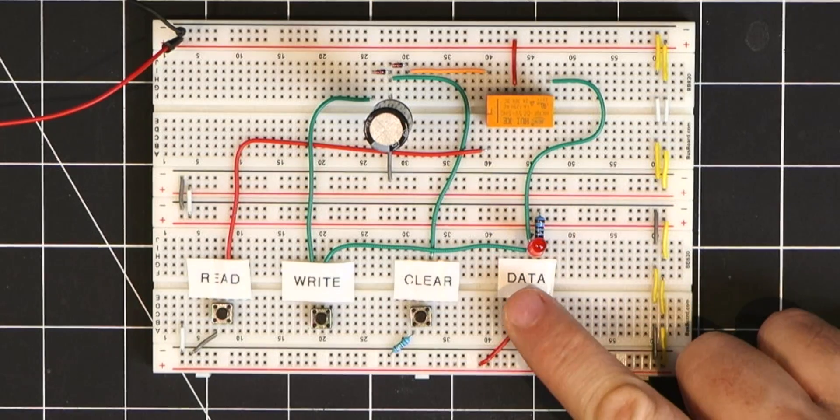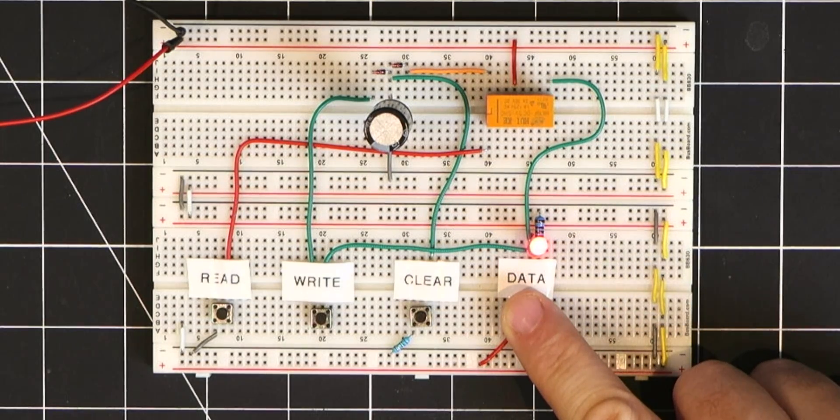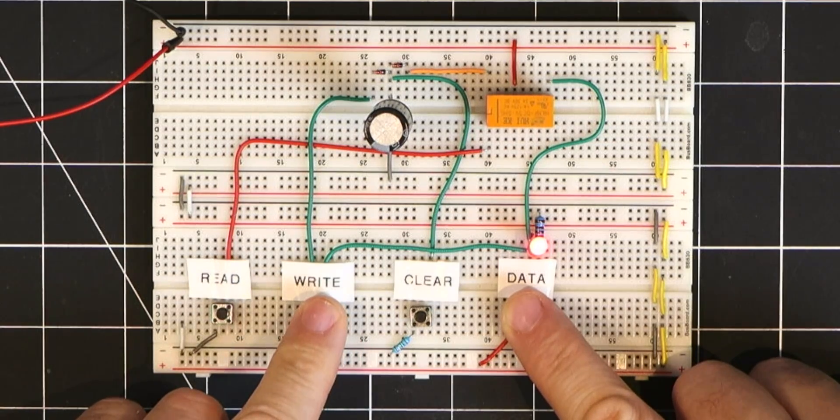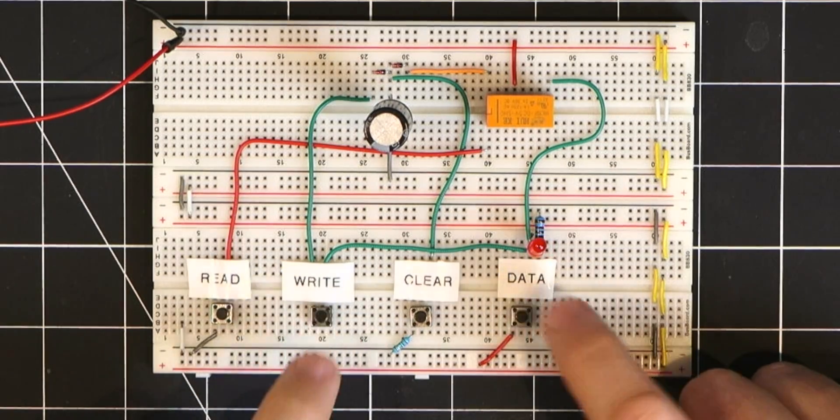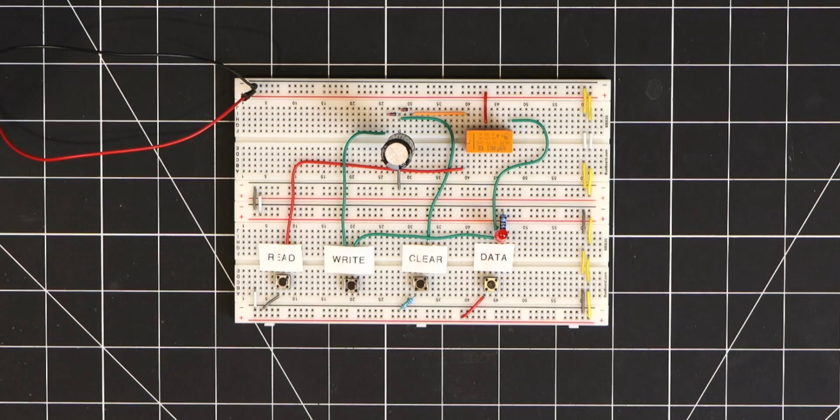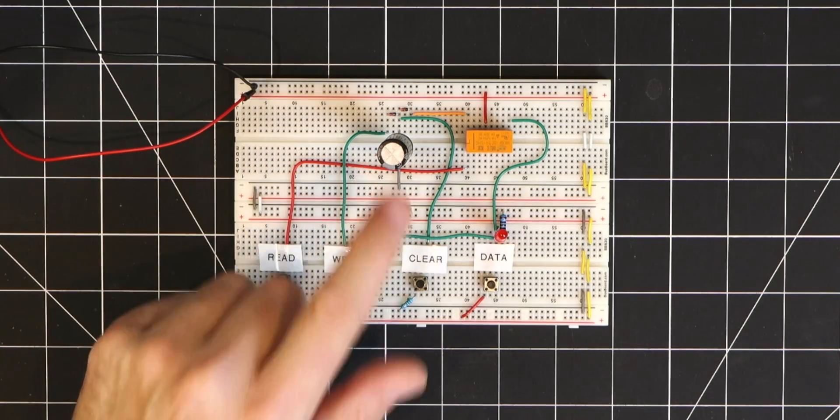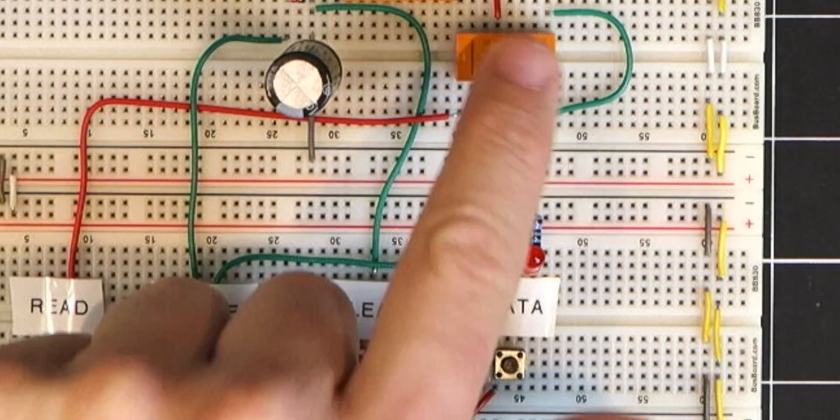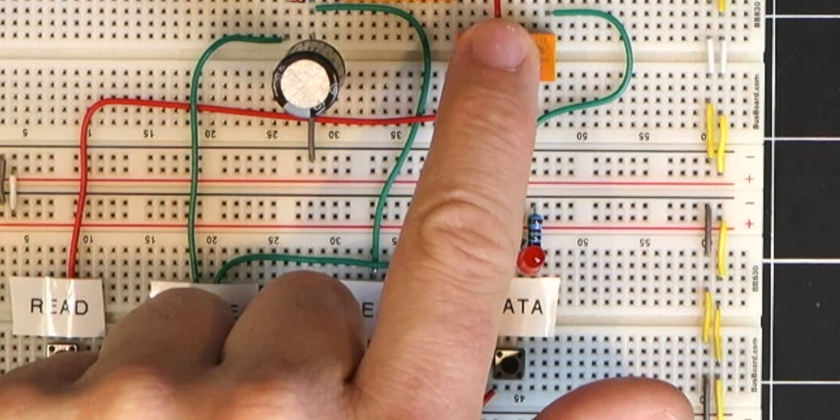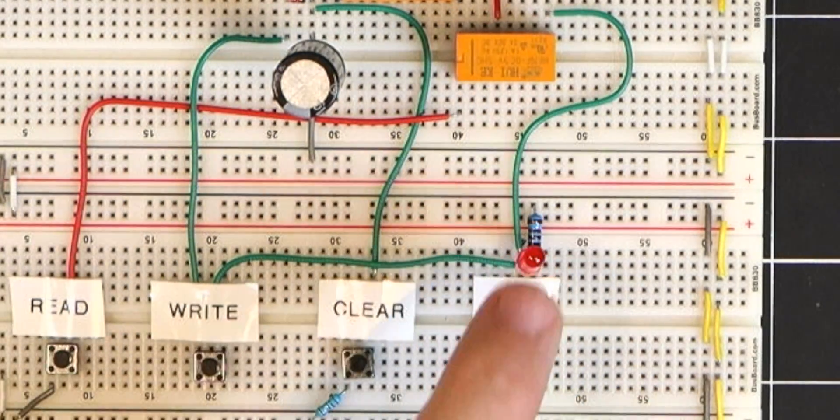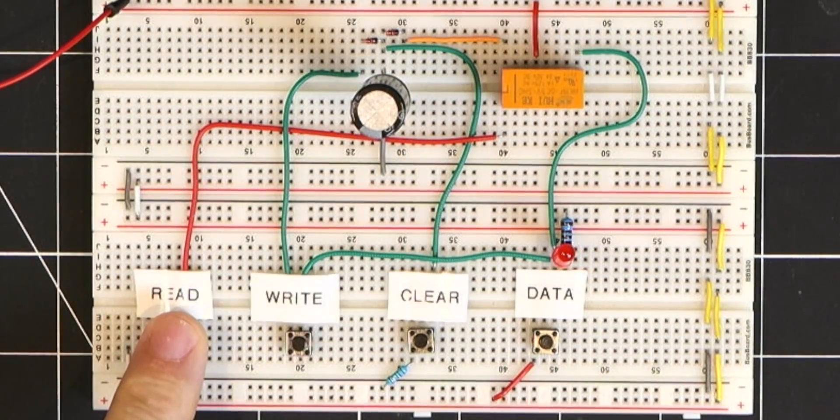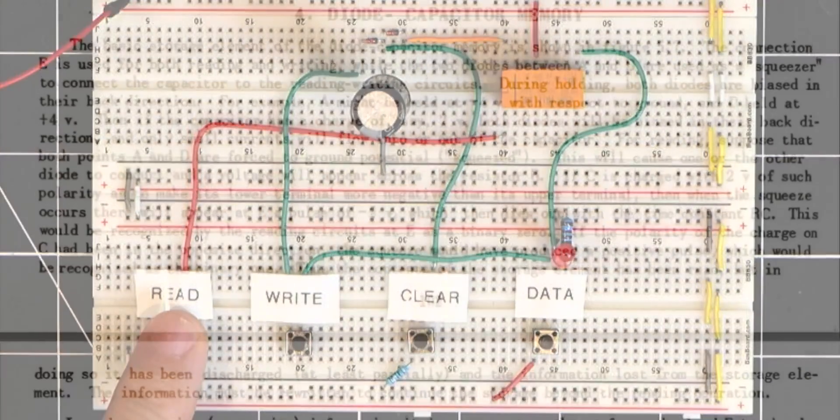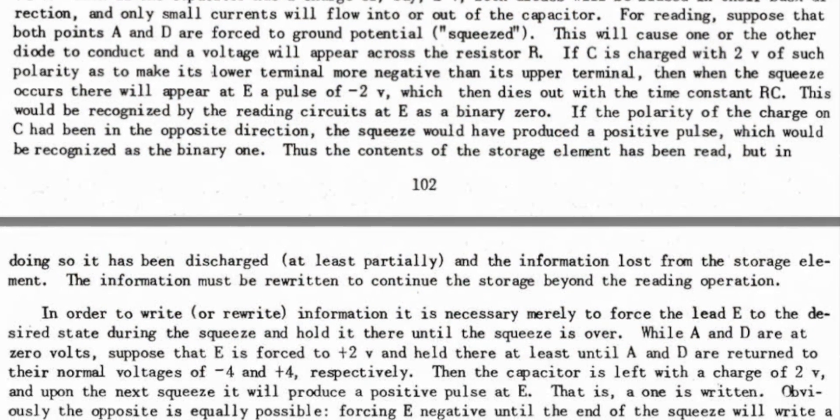So we'll start by putting a one on the data bus and when I do this the data is not stored anywhere until I press the write button and this redirects the data bus value to charge the capacitor. Now that the capacitor is charged we can use the read button to access it, and this button simply grounds this relay allowing the capacitor to activate it and supply a voltage to the one-bit data bus. Note that when the read button is pressed the output is momentary, and that's because the capacitor is discharged each time the read is performed.